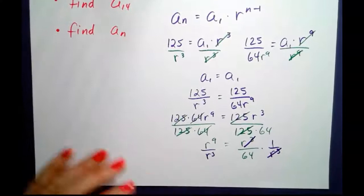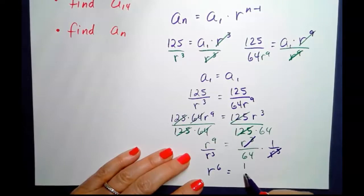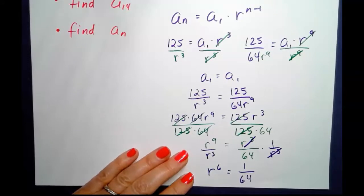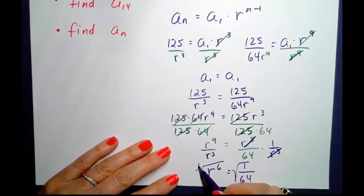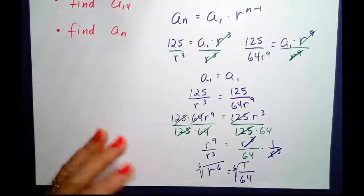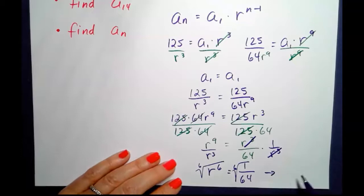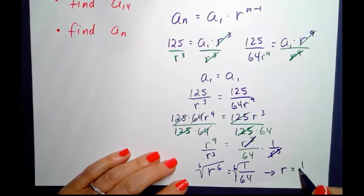So now we've got r to the sixth equals 1 over 64. If r to the sixth equals 1 over 64, we just need to take the sixth root. Since 64 is 2 to the sixth, we're ending up with r equals 1 half. We just found r. So our common ratio is 1 half.